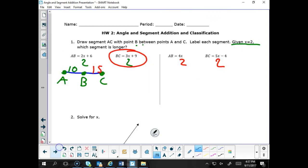Let's continue to look at a couple of other things. Let's look at a couple of these problems. The first step in understanding mathematics and what is expected in a question is to read the directions. It says draw segment AC with point B between point A and C. Label each segment given x equals 2. Which segment is longer? So we need to look at that first word, draw.